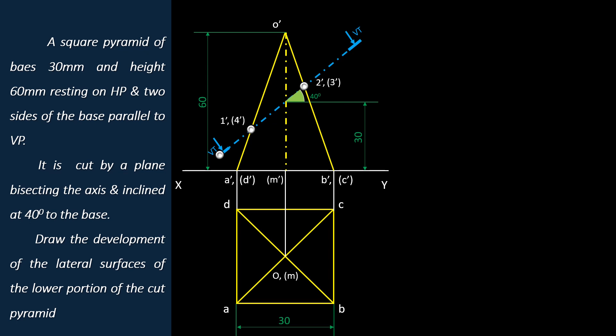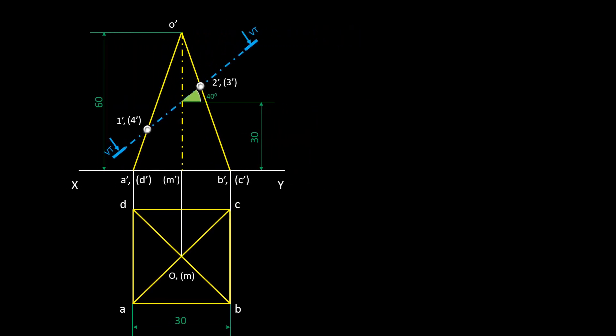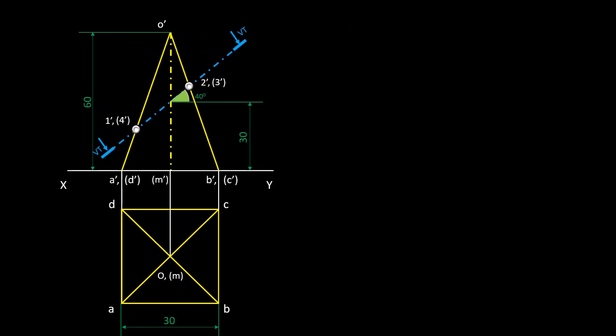Now let's draw the pattern of the square pyramid. Try to start developing from the shortest edge. In this problem OA is the shortest one after sectioning the solid, which is not compulsory, but that's the right way to do the development. We know that every detail in the pattern should be true length. When we start developing from edge OA, we need the true length of OA first. Here true length of OA is not available in front view and as well as in top view. We have to find the true length before developing the pyramid.